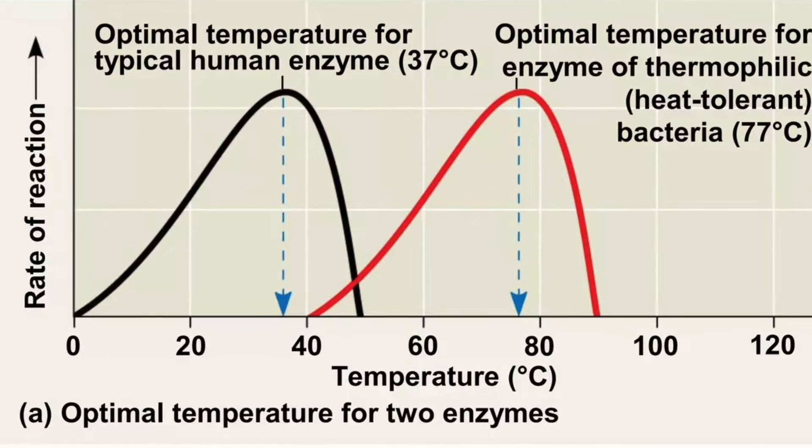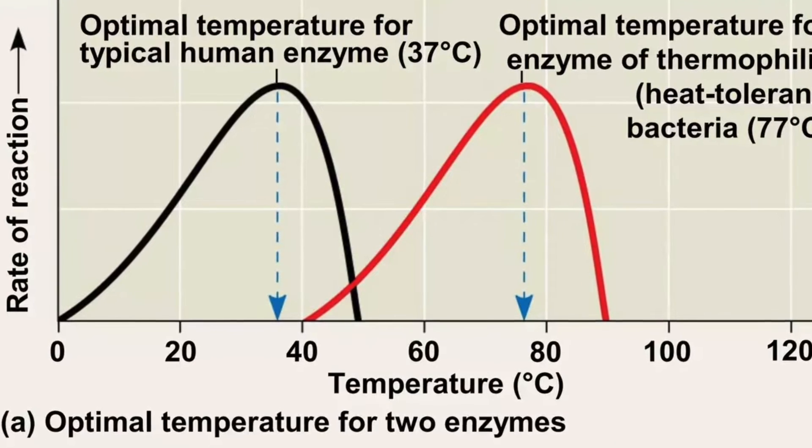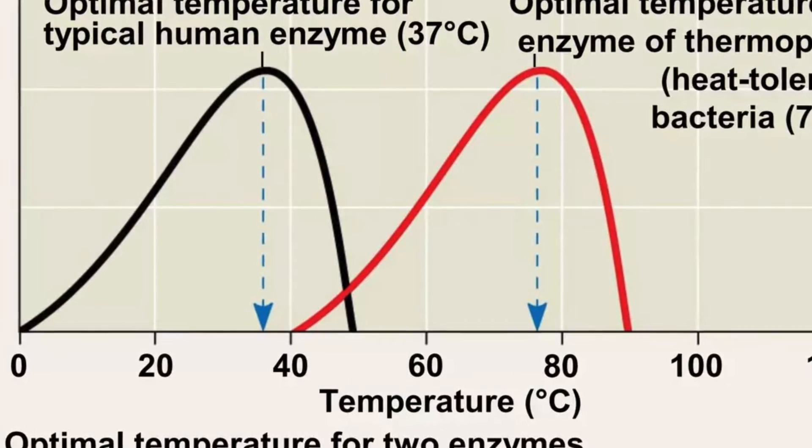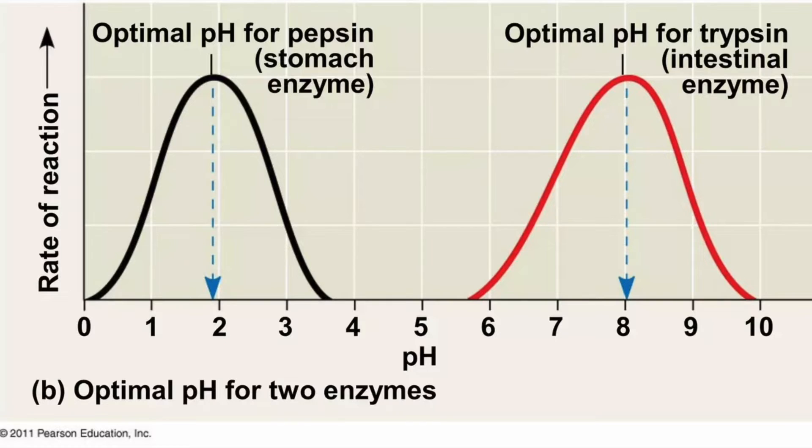Because structure and function are so intricately tied in biology, lack of structure results in lack of function. We generally see a bell-shaped curve for how temperature affects enzymatic activity: too hot causes denaturation, and too cold means insufficient kinetic energy for molecules to interact. This is also true for pH — the relative concentration of hydronium and hydroxide ions can compromise hydrogen bonds and ionic bonds. The same applies to salinity, since ions like sodium and chloride can compromise electromagnetic interactions and hydrogen bonding.